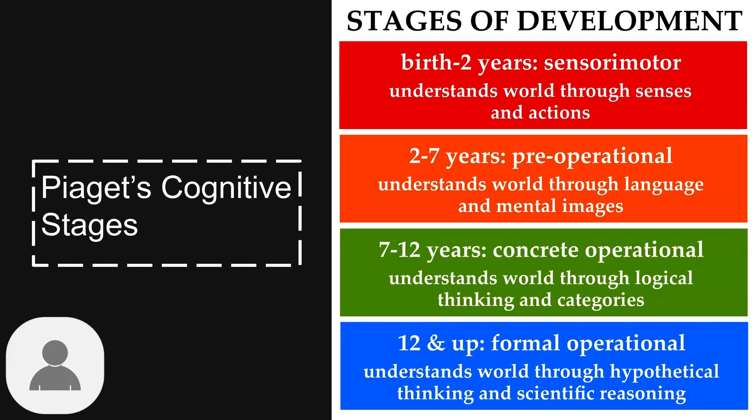features understanding through language and mental images. The concrete operational stage, from seven to twelve years, brings logical thinking and categorization. Finally, the formal operational stage, from age twelve onward, introduces abstract and hypothetical thinking.